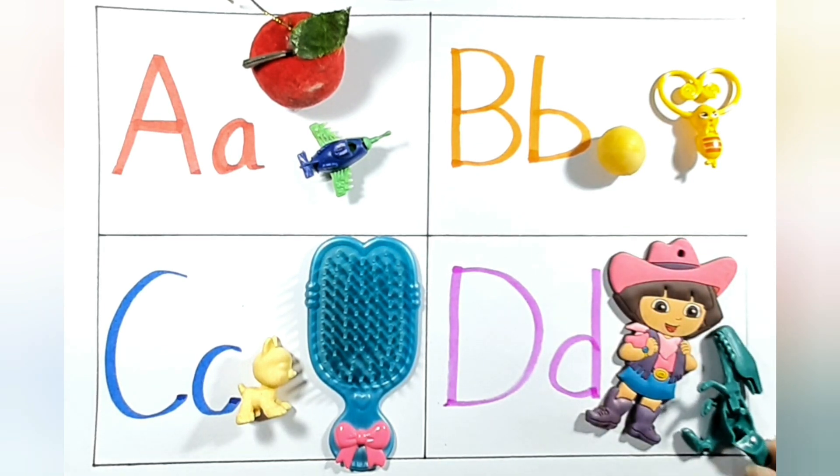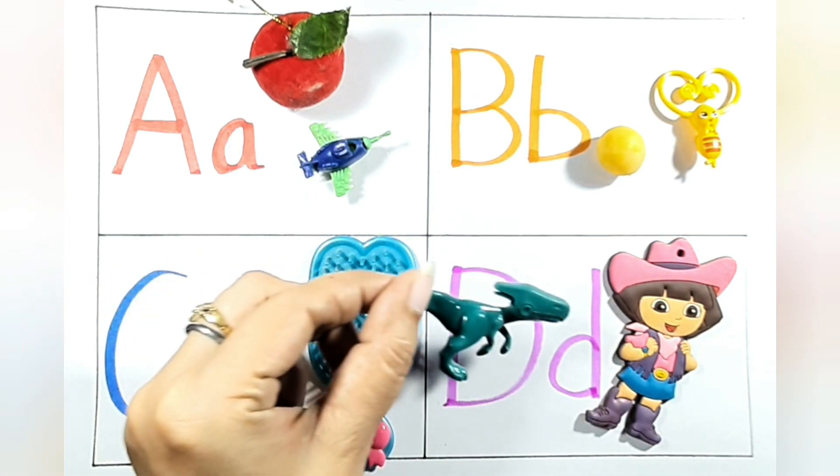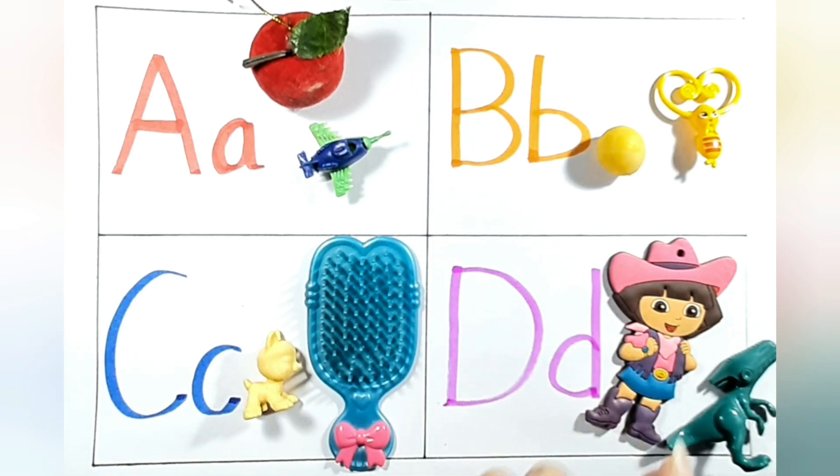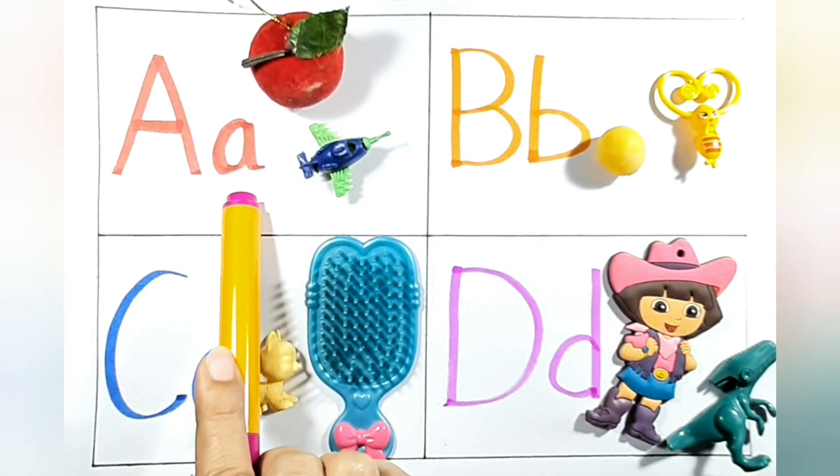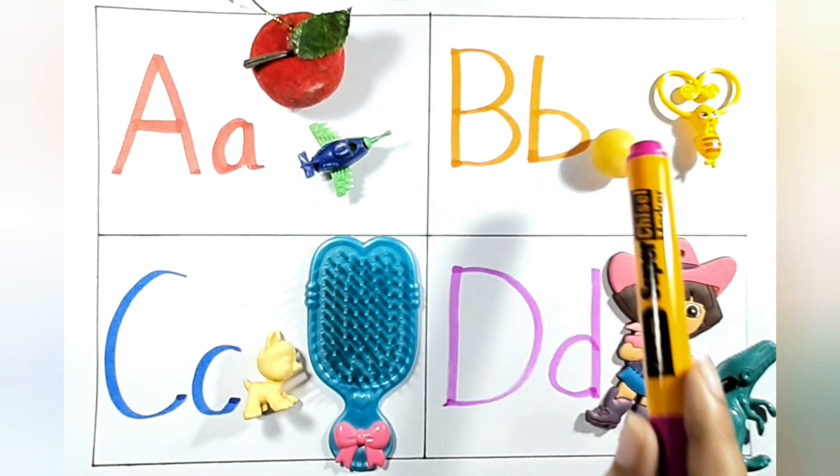D for Dora. Here it's coming. Oh, he's eating. It is eating Dora. Dora, no, no, no. Oh, it sits beside Dora. A for apple, A for airplane, B for ball, B for bee.